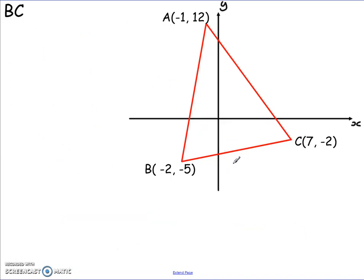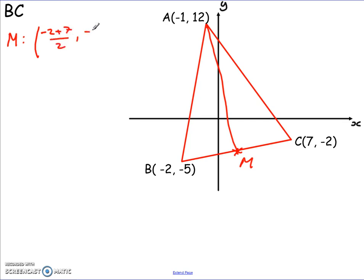The last median is the median of line BC — the line from point A to the midpoint of BC. Same approach: find midpoint M first. Midpoint M: negative 2 plus 7 over 2, and negative 5 plus negative 2 over 2. Negative 2 plus 7 is 5, divided by 2 gives 5 over 2. Negative 5 minus 2 is negative 7, divided by 2 gives negative 7 over 2. So midpoint M is (5/2, −7/2).